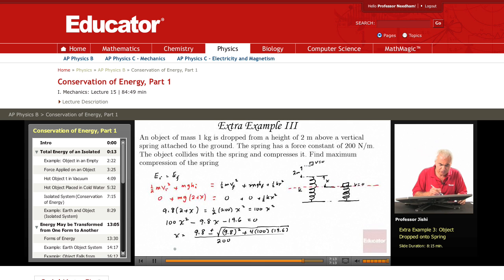So x equals 9.8 plus square root, I'll just use 10 for now, just as an estimate, to estimate. I'll replace 9.8 by 10. And so this is 10, that's 100.